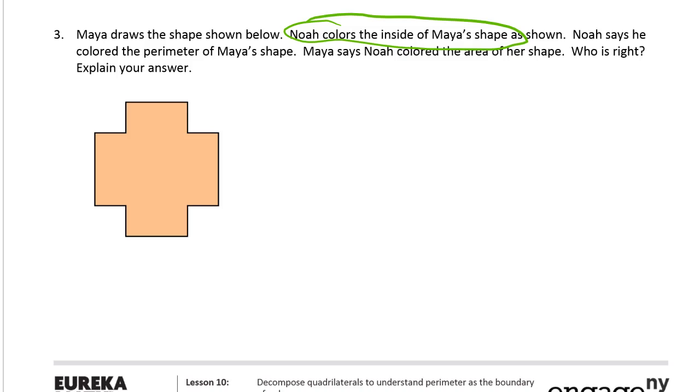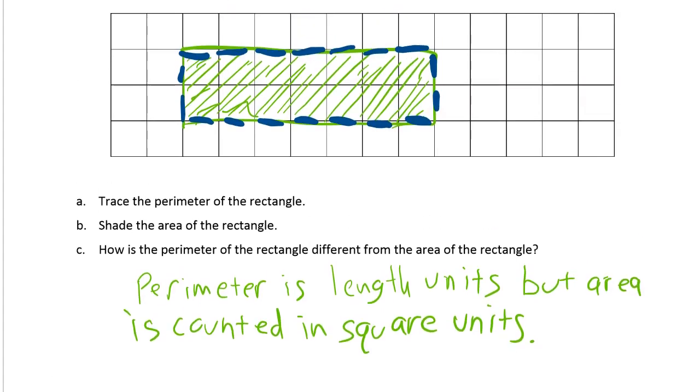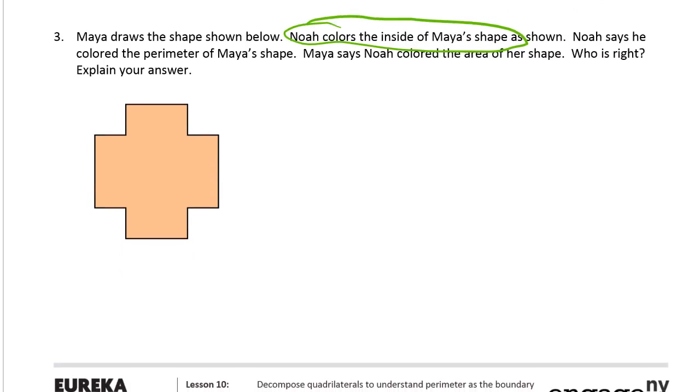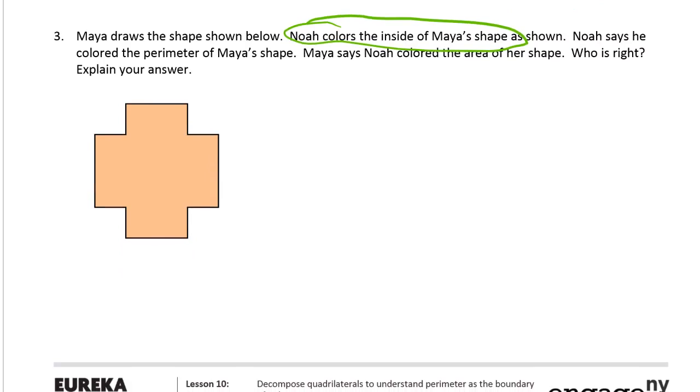Maya says Noah colored the area. Well the inside is the area, right? That's what we just did up here with that rectangle - shade the inside for the area. You can't shade perimeter, you can only trace it. So Maya is right.